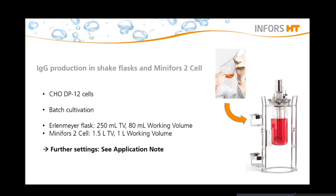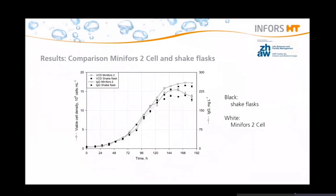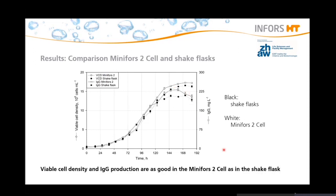Did they get good results? Yes, the results are shown and published in the application note. On this graph, you can see the results for the Miniforce 2 cell and the shake flask. The white dots show the IgG concentration and viable cell density of the Miniforce 2 cell, and the black dots show the results for the shake flask. The viable cell density and IgG production are as good in the Miniforce 2 cell as in the shake flask.